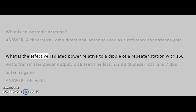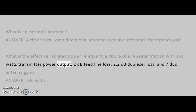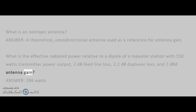What is the effective radiated power relative to a dipole of a repeater station with 150 watts transmitter power output, 2 dB feed line loss, 2.2 dB duplexer loss, and 7 dBd antenna gain? Answer: 286 watts.